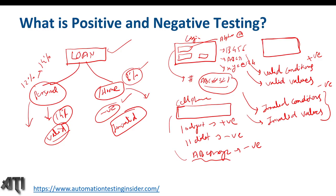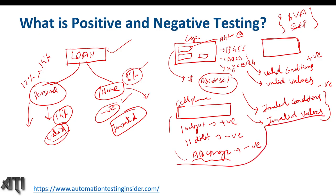Two techniques we use in positive and negative testing are Boundary Value Analysis (BVA) and Equivalence Class Partitioning (ECP). I'll discuss these in a separate video in more detail, but let me give a quick example since we apply them when driving test cases.